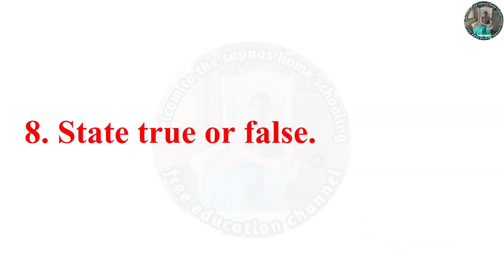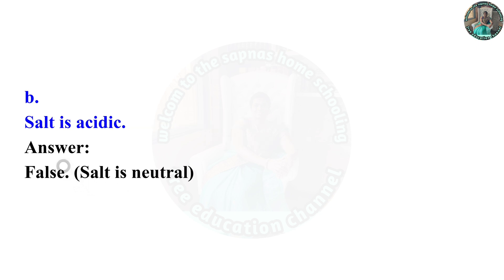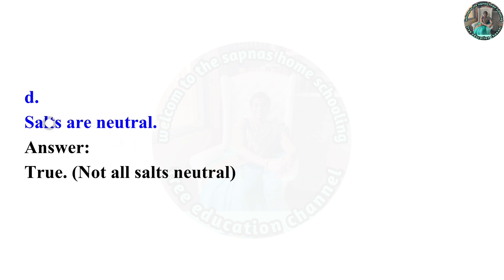True or False: Oxides of metals are alkaline in nature — True. Salt is acidic — False, because salt is neutral. Metals corrode due to salt — False; acids and bases corrode metals. Salts are neutral — True. Not all salts are neutral — also noted.